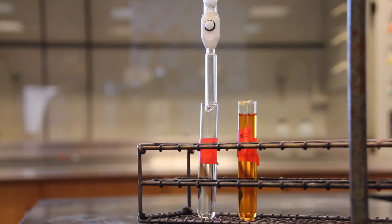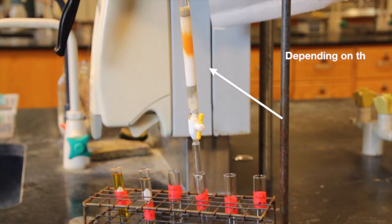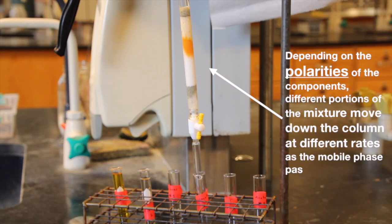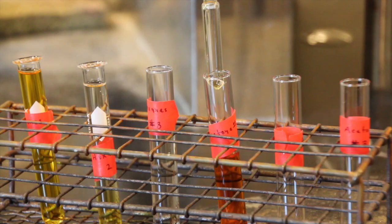A sample is placed at the top of the stationary phase, and depending on the polarities of the components, different portions of the mixture move down the column at different rates as the mobile phase passes through the column.